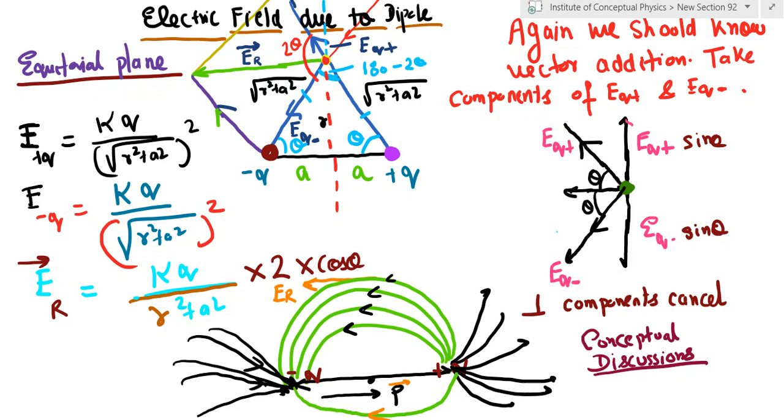You can see the sine components of the two electric fields Eq plus and Eq minus are cancelling each other and the cosine components are getting added. So whatever resultant came, I just multiplied it with 2 times cos theta. That's the answer of the electric field.